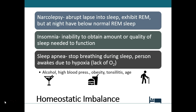Disruptions to the circadian rhythm can lead to depression as the brain develops imbalances in neurotransmitters associated with light and darkness, such as melatonin and serotonin. Sleep apnea is a disorder where you stop breathing throughout your sleep period, usually for 10 or more seconds. Most often it occurs because of a lack of muscle tone in the muscles associated with the pharynx, allowing the airway to collapse during sleep. Snoring often occurs in those with sleep apnea.